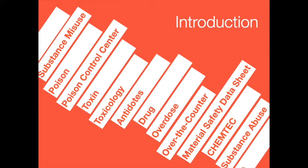Poisoning deaths in children under age six represent less than three percent of total deaths from poisoning, while the 20 to 59 year old age group represented about 73 percent of all deaths. Due in part to child-resistant packaging and preventive actions by parents, there has been a decline in child poisonings. At the same time, there has been an increase in adult poisoning deaths, linked to an increase in both suicides and drug-related poisonings.